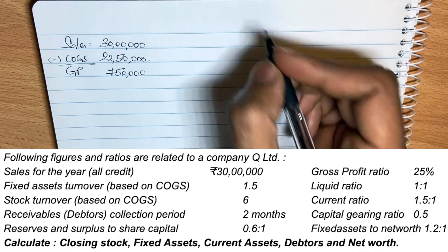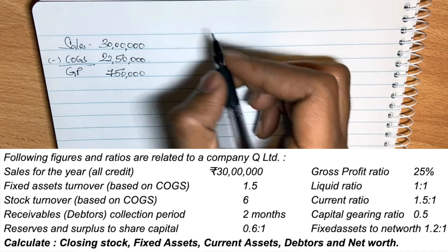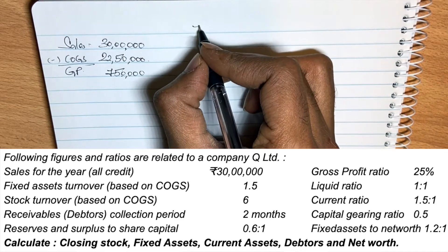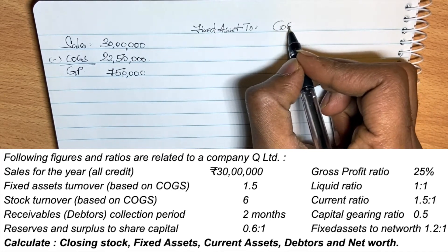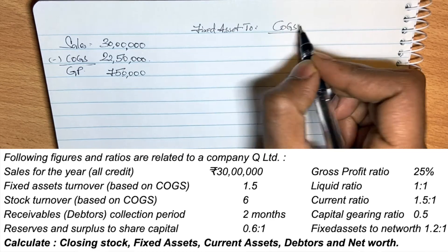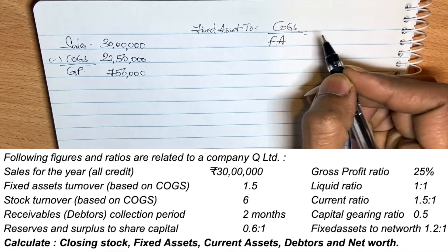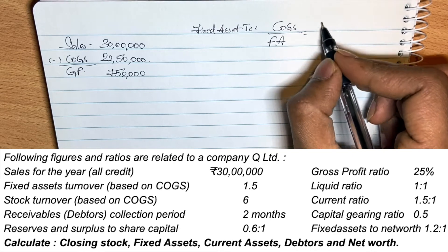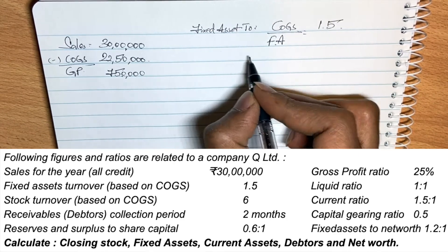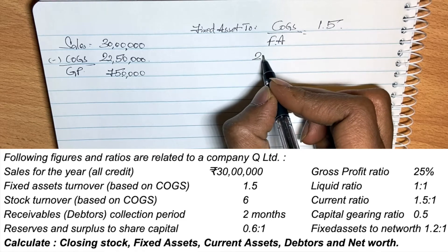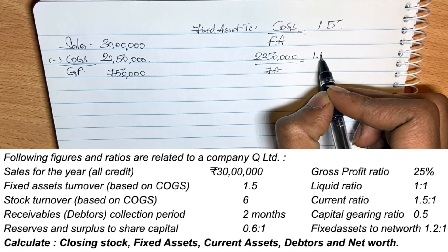This is fixed asset turnover based on cost of goods sold. The formula is: fixed asset turnover equals cost of goods sold divided by fixed assets. The given answer is 1.5. So 22,50,000 divided by fixed assets equals 1.5.